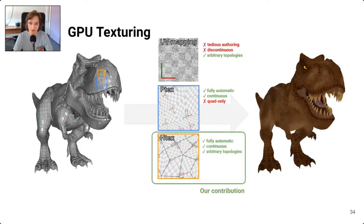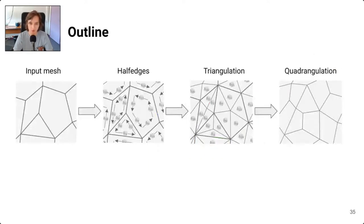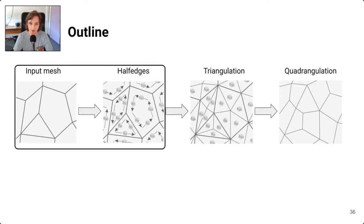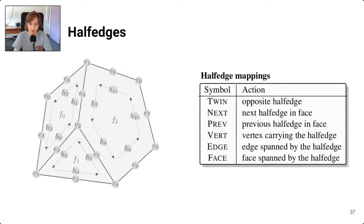Thanks to HTex we now have a GPU-friendly solution that provides the best of both worlds between UV maps and Ptex. In the remainder of this talk I will describe in more detail how we build HTex, which we can summarize as four main blocks: the input mesh, the half-edges, the triangulation, and the quadrangulation.